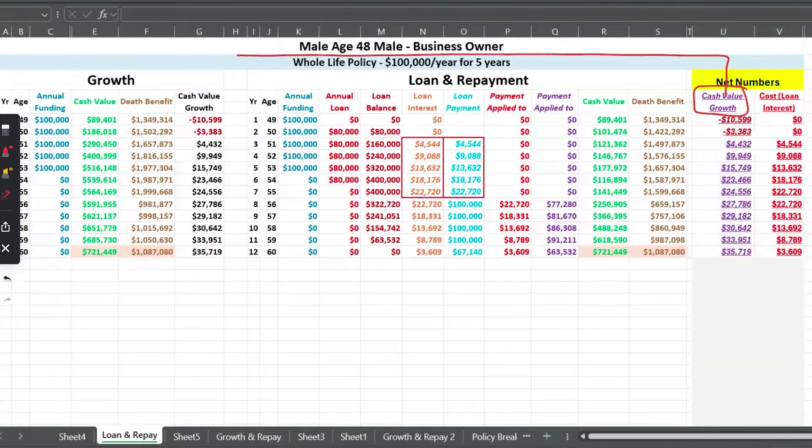This is the same as this. This is just showing what you're getting from the insurance company net year over year. To the right, that's this, the loan interest. How does this help? I can see every year what I'm getting from the insurance company and what I'm paying them.